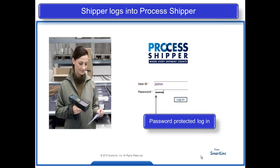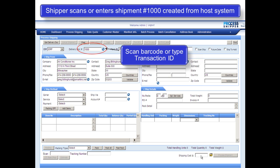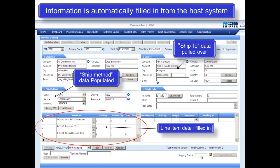At the shipping station, the shipper simply logs into Process Shipper by entering in the user ID and password. Once inside Process Shipper, the shipper scans or enters the shipment number 1000, which was created from the host system. The information from the host system is automatically filled in to Process Shipper.